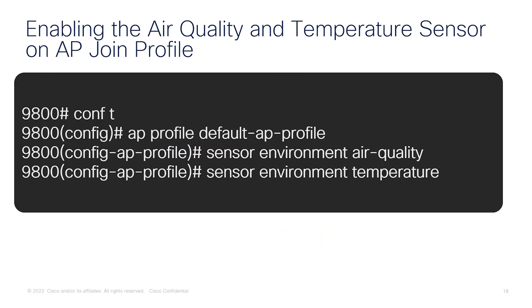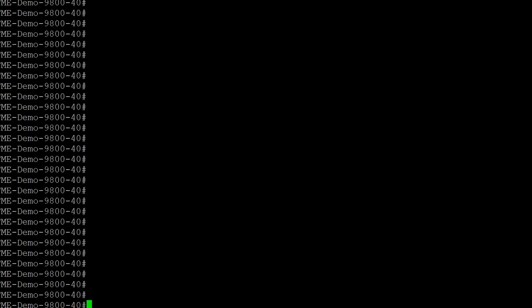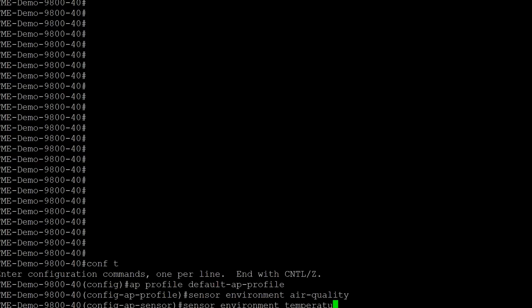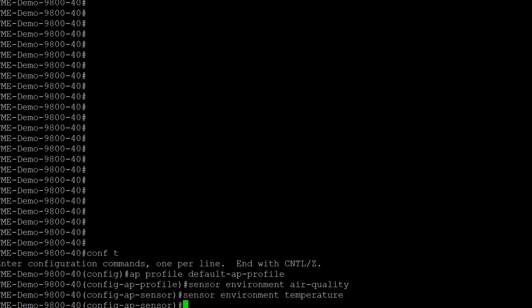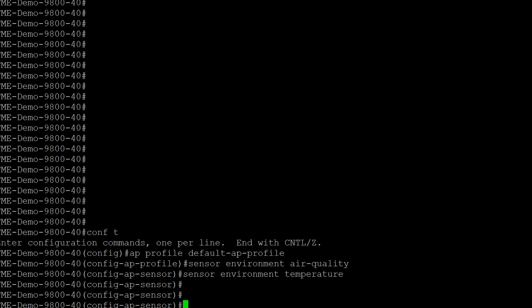Now we have to enable the air quality and temperature sensors on the access points. We can configure a default AP profile with the sensor environmental air quality and temperature settings. I'll now do that on the controller — here I've enabled the environmental and air quality settings.